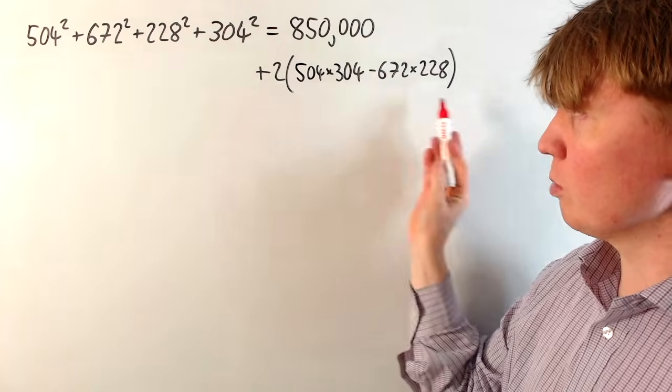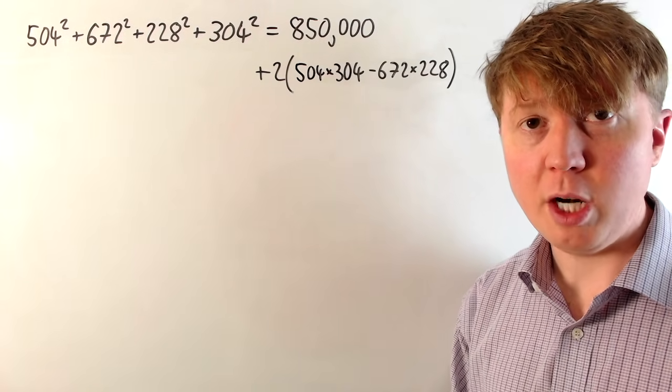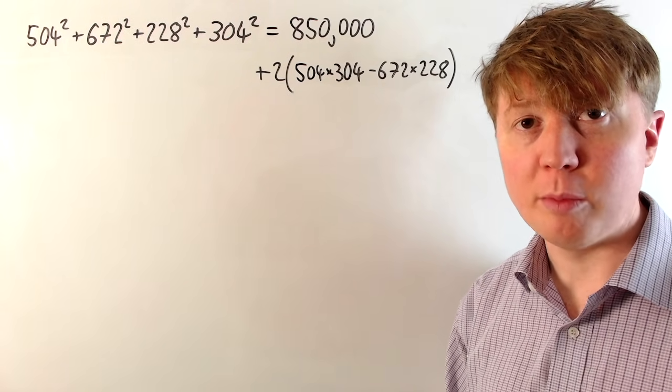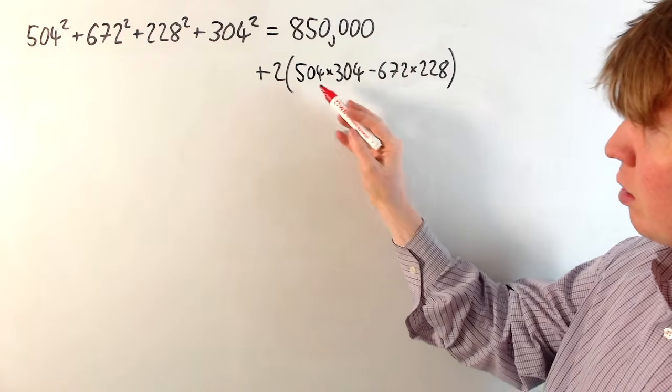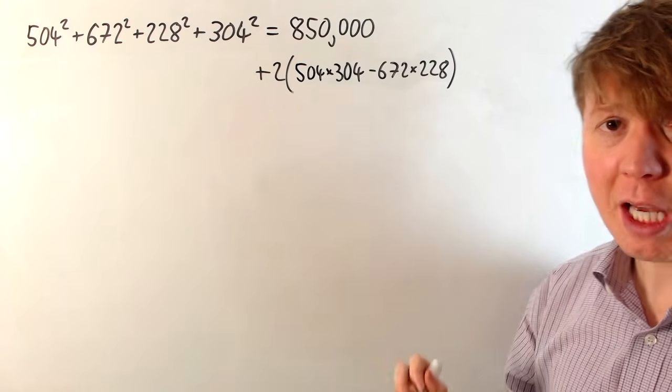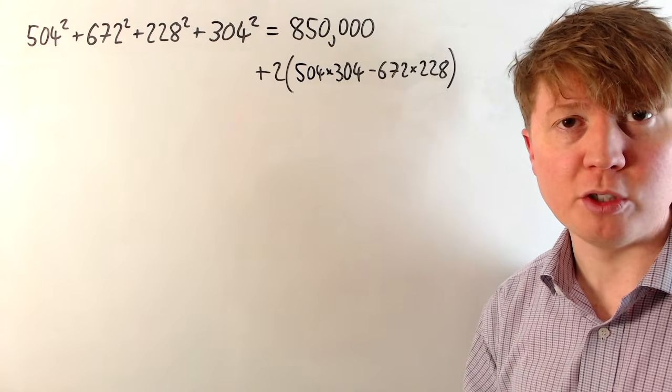Now before attempting these multiplications, we can again think algebraically. We can see that there are some common factors we could take out of these products to make the numbers smaller and more manageable. So you can see that they're all even, but actually even better, all 4 of these numbers are multiples of 4.